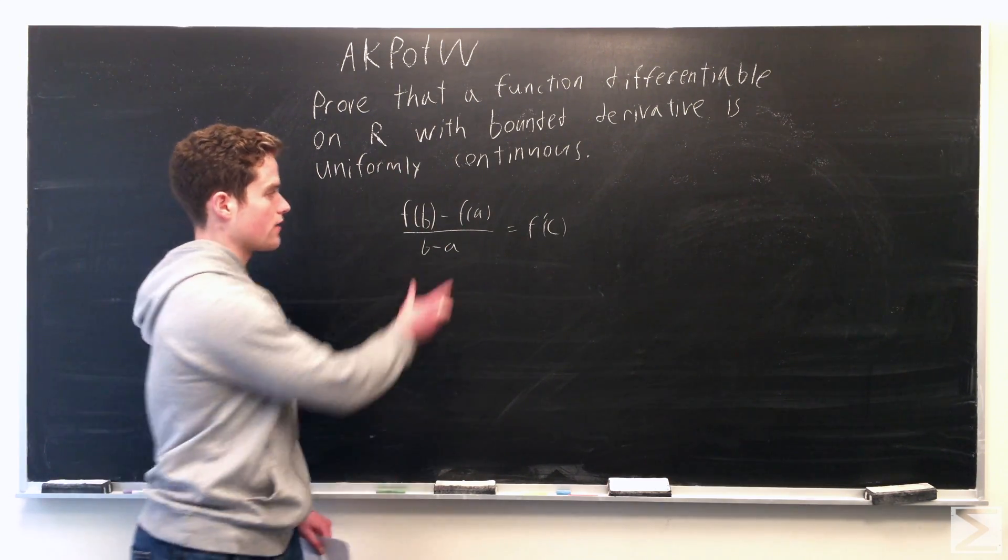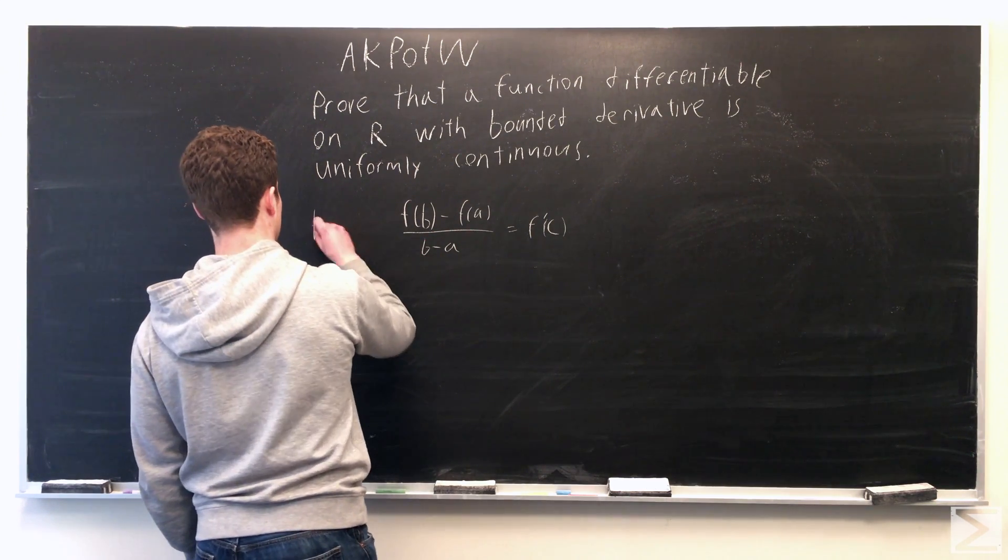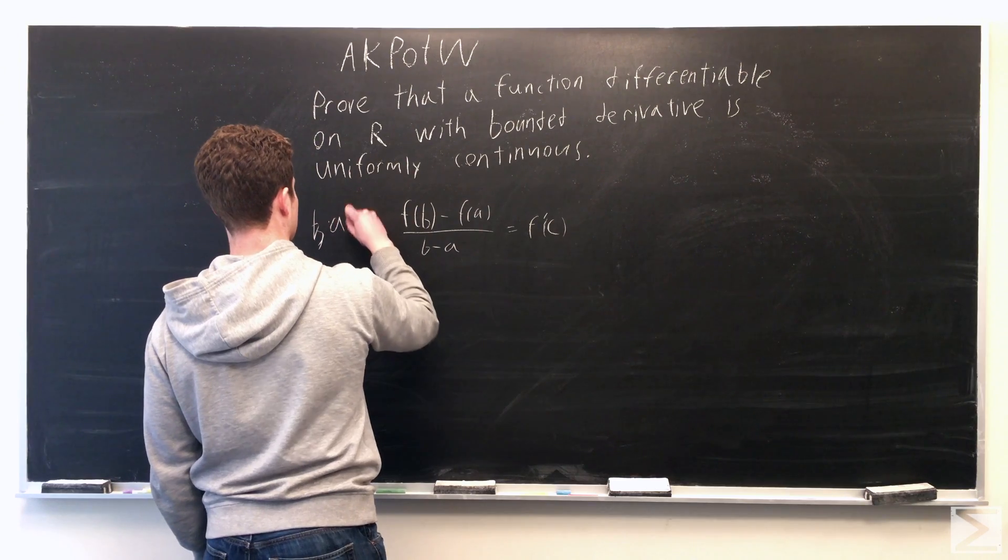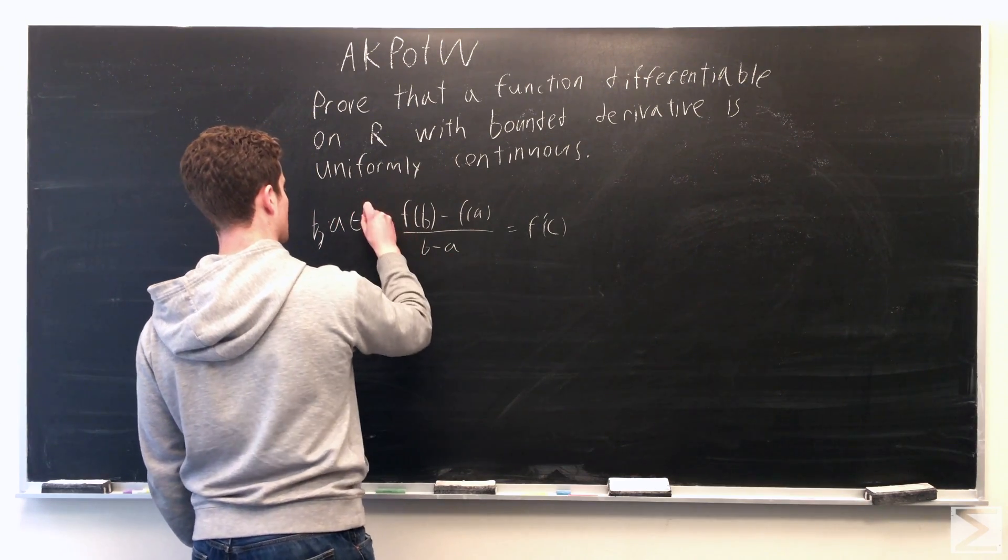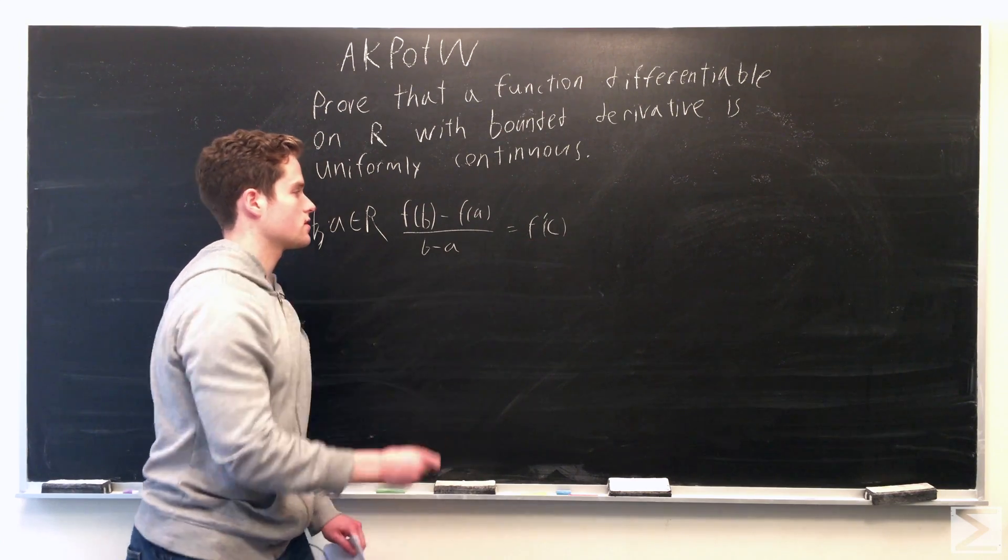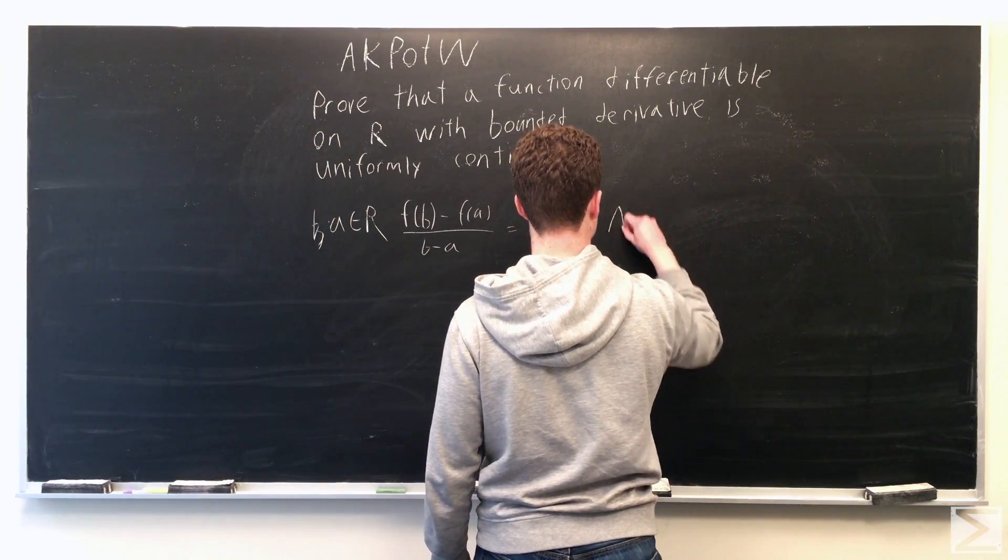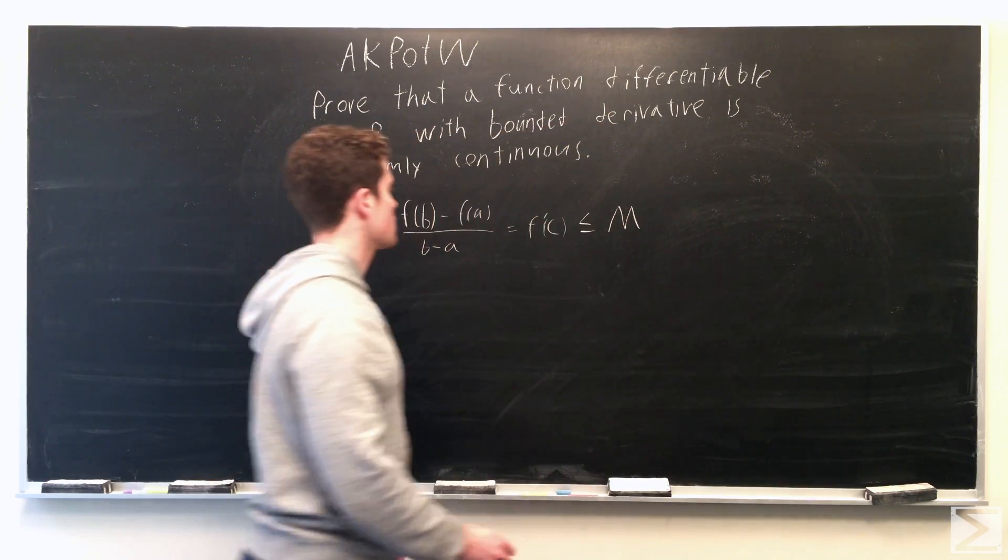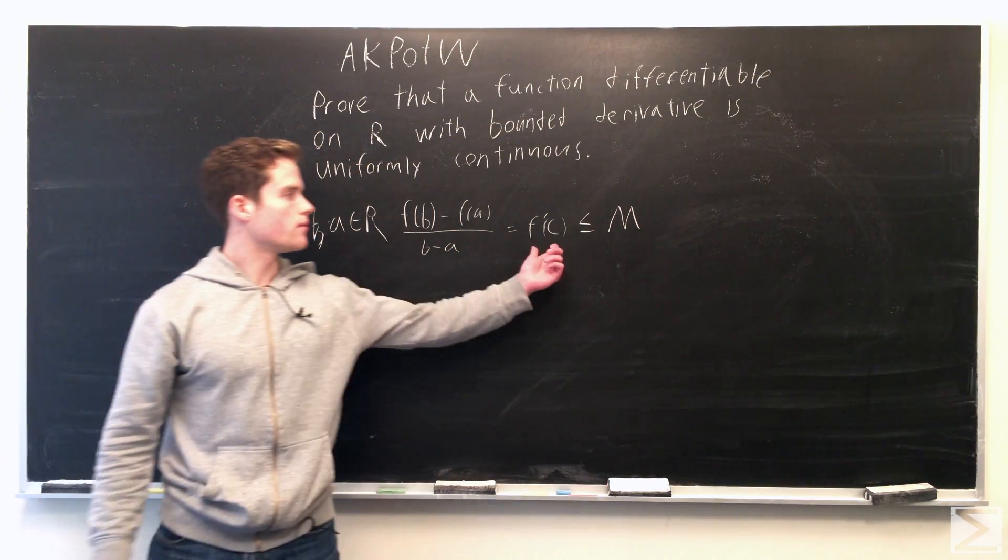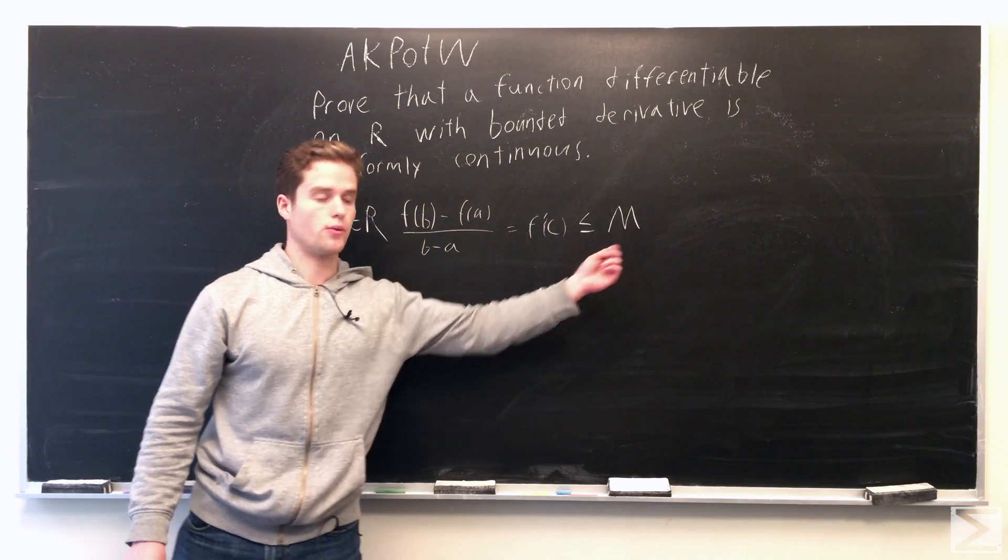And so looking at f of b minus f of a over b minus a, where b and a are in R, looking at this, our derivative is given as bounded, so it's less than or equal to some value m.